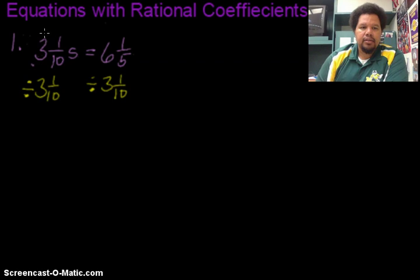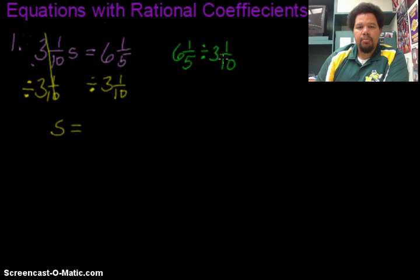So what that does is get my S by itself. Now I have a lot of work to do over here. This is what I'm going to set it up as a division problem. In order to divide this mixed number by this mixed number, both of these numbers need to be put into improper fraction form.